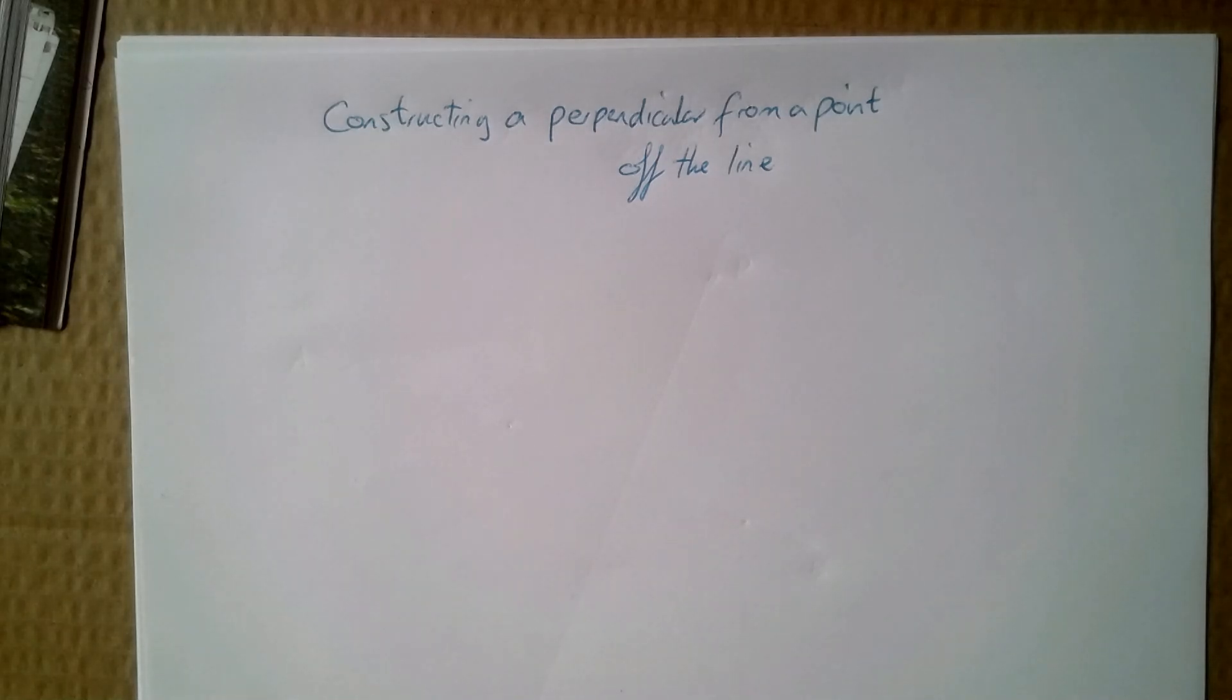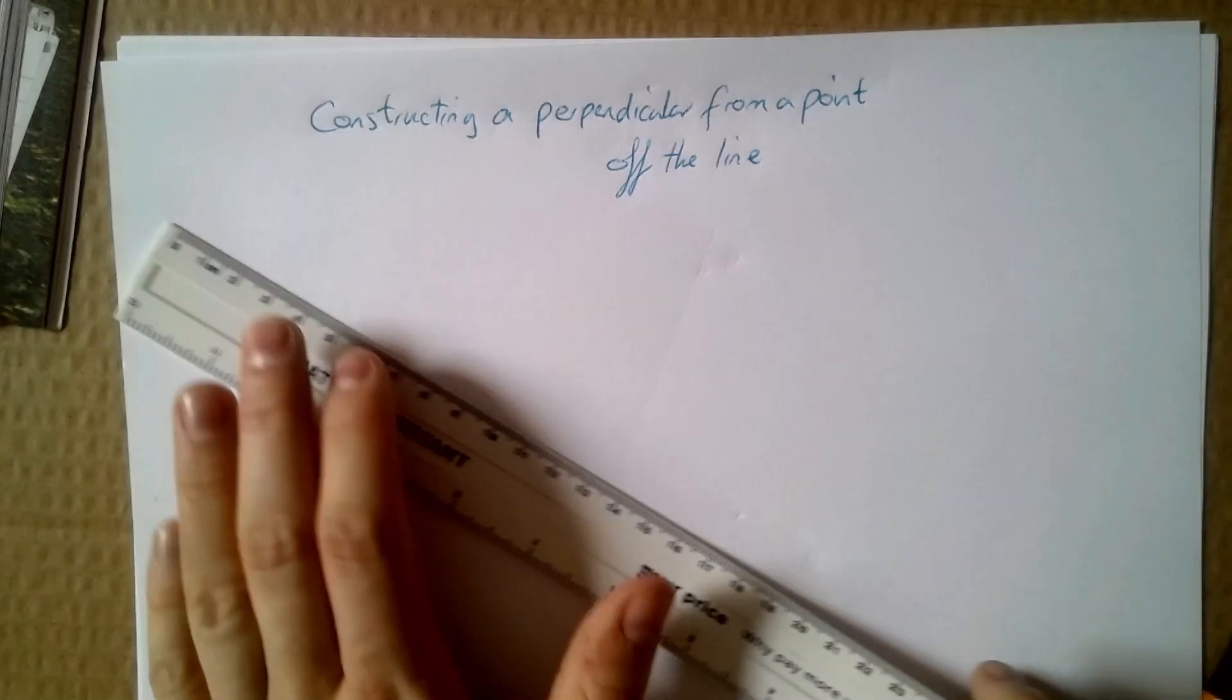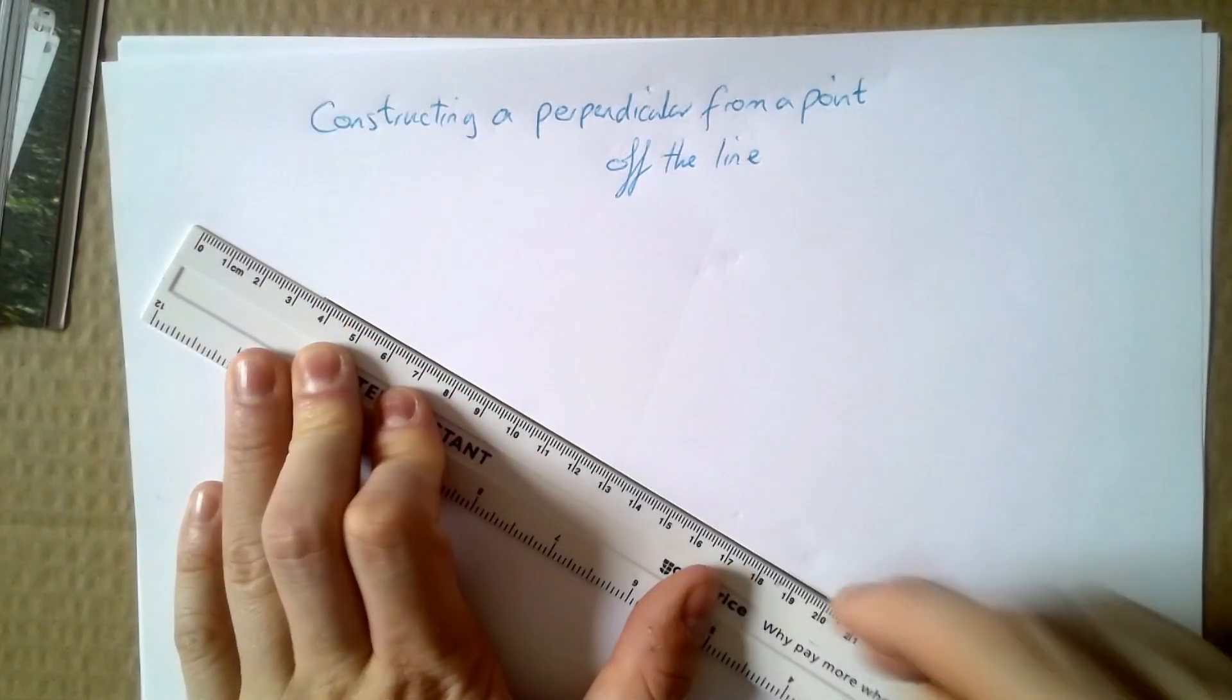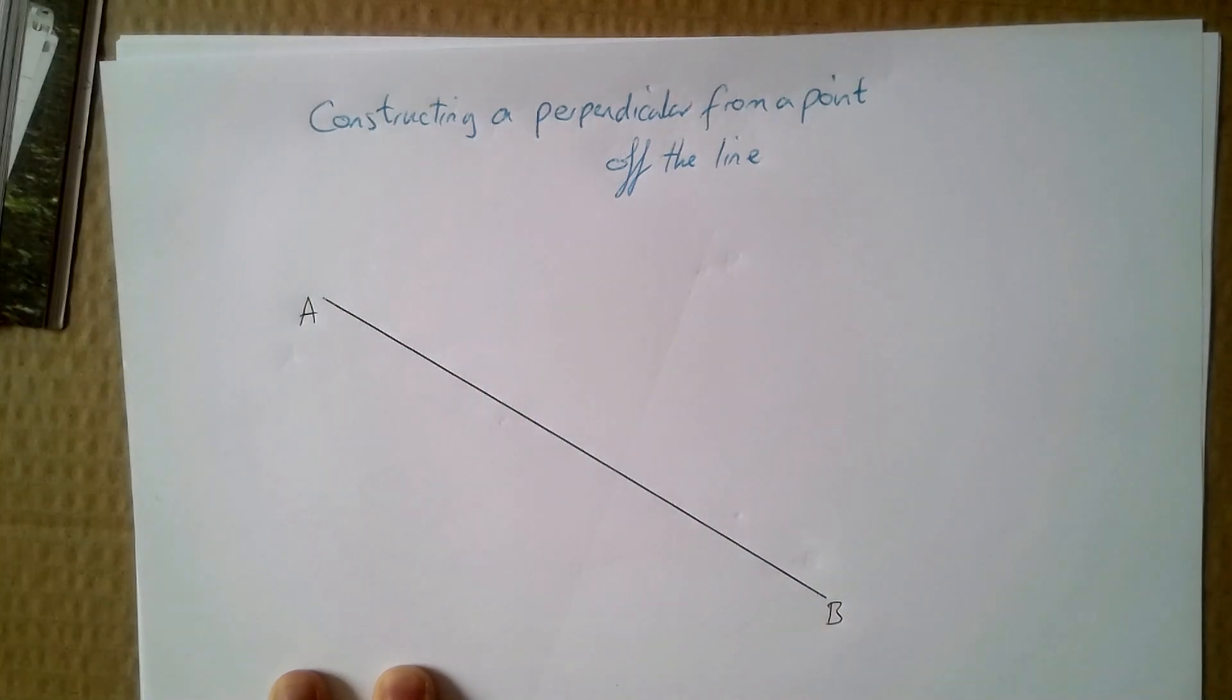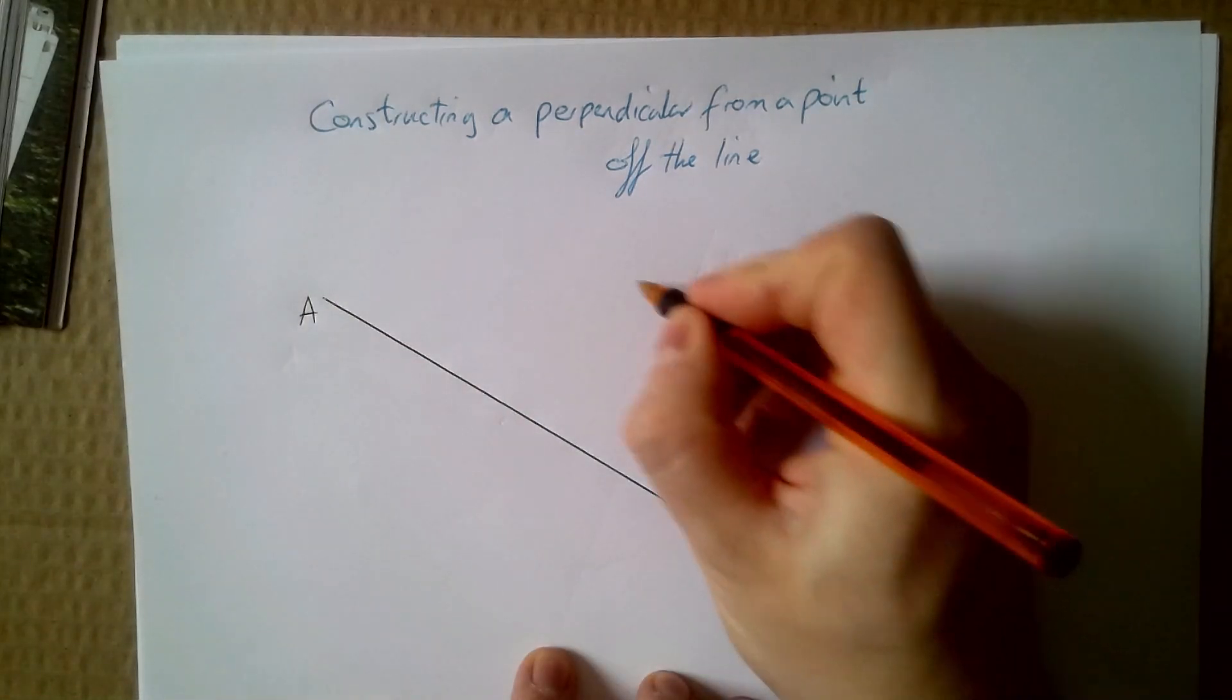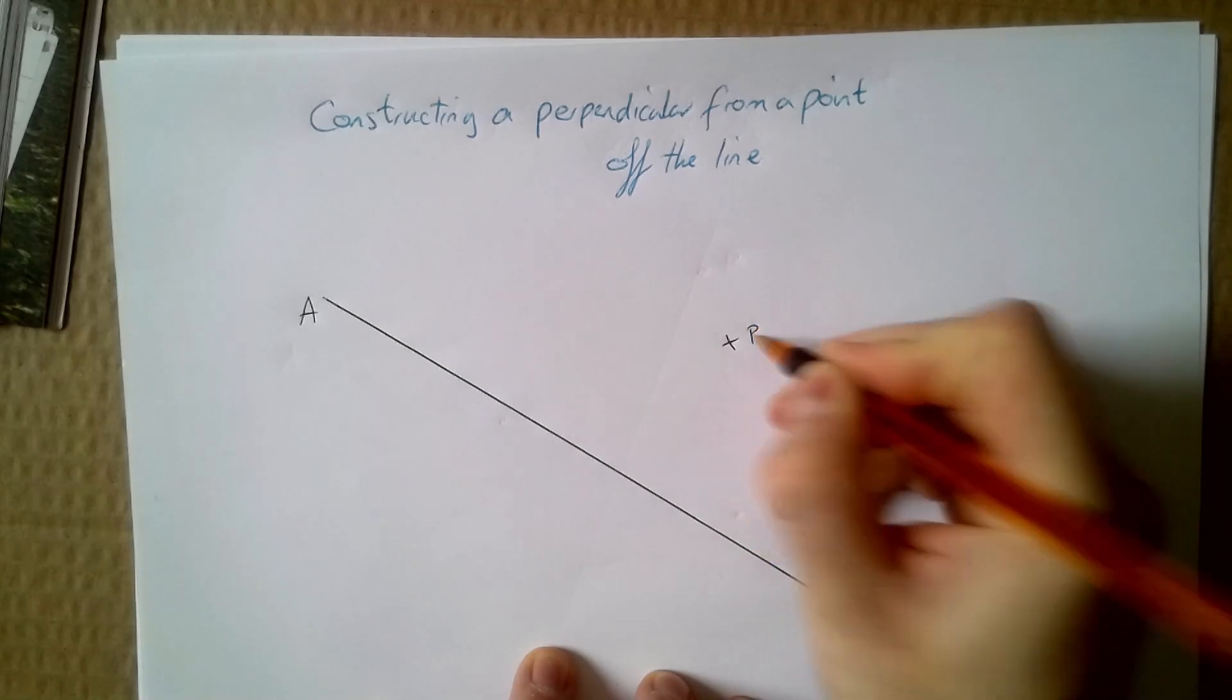So the first thing we're going to do is construct a perpendicular from a point off the line. Now I'm going to make a completely different example up. Here is my line AB and I'm going to create a point P.